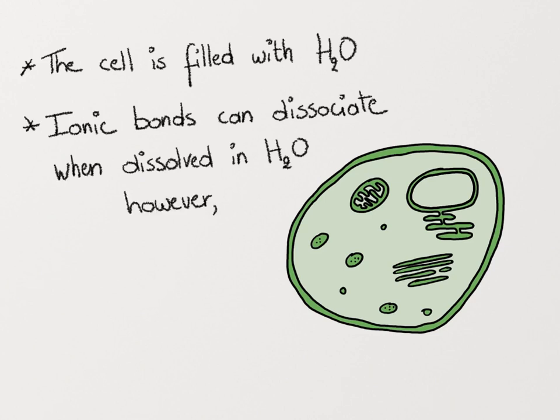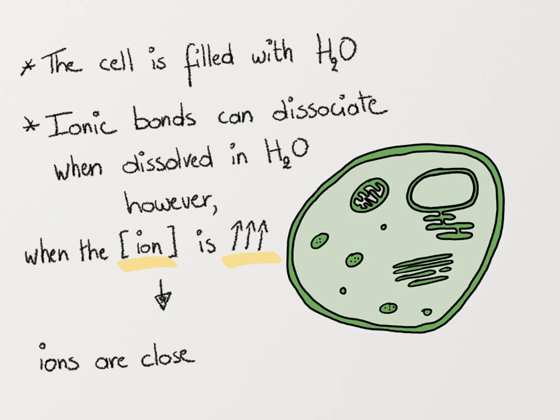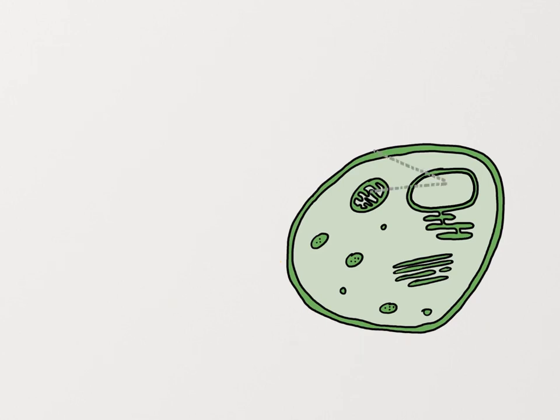If the concentration of these individual ions gets really high, however, then the individual ions are forced to be so close together that the water molecules can no longer independently solvate these ions. And under that situation, at high concentration, ionic bonds form stably, even in water molecules.